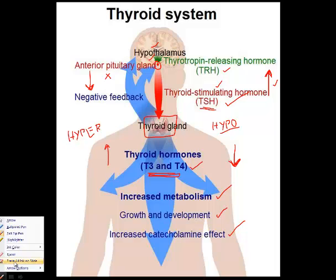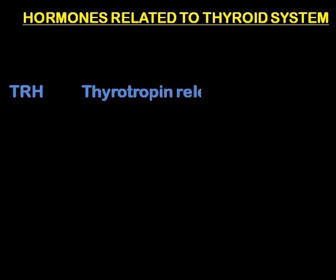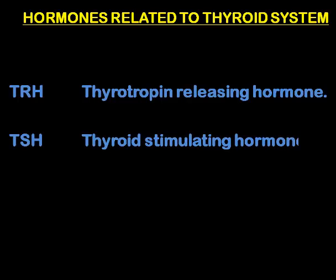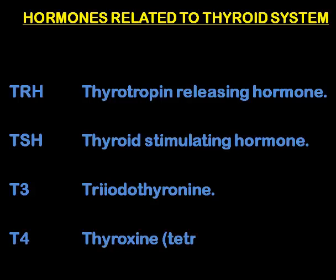Now, a brief look at the hormones associated with the thyroid system. They are the TRH, or the thyrotropin-releasing hormone secreted by your hypothalamus, which acts on your pituitary gland and stimulates the production of TSH, or thyroid-stimulating hormone, which stimulates your thyroid gland and produces T3, triiodothyronine, and T4, tetraiodothyronine, or thyroxine.